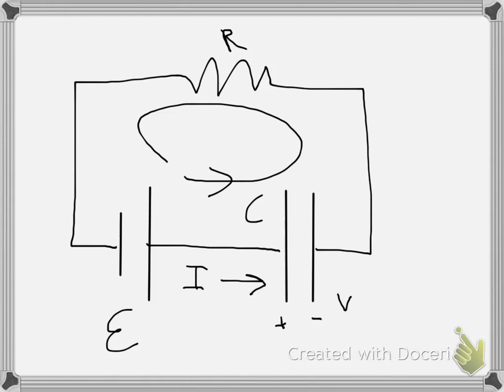If I do the Kirchhoff's loop law here, what I'm going to find out is that E plus V, and remember there's no voltage drop across the resistor, so I'm going to ignore that, that's going to be equal to zero.